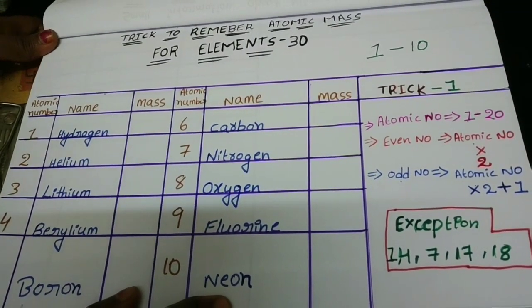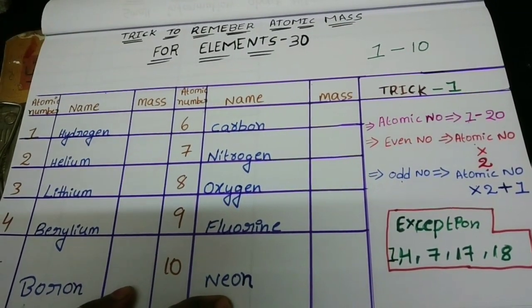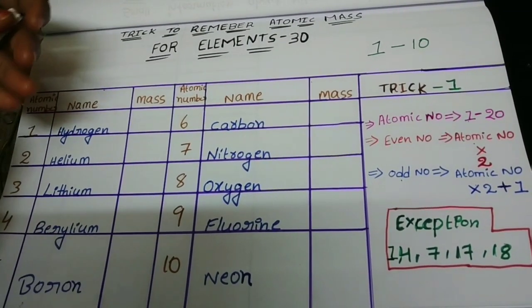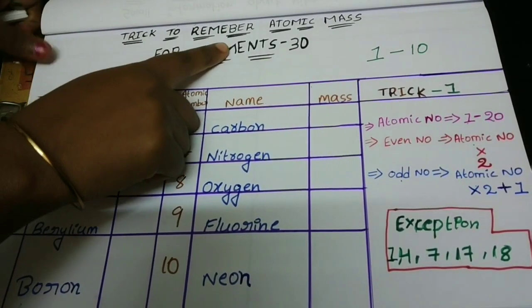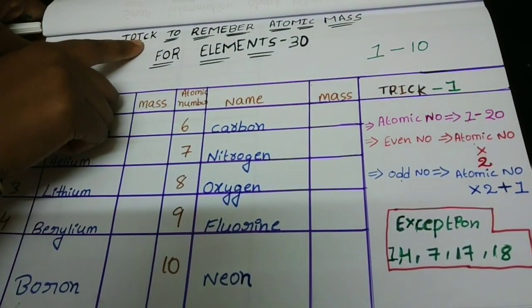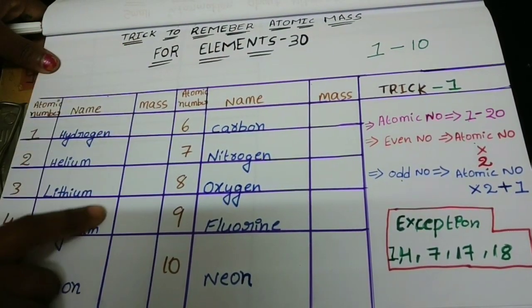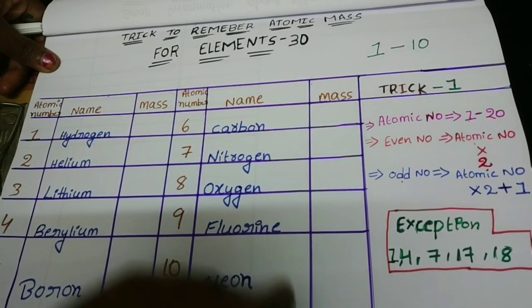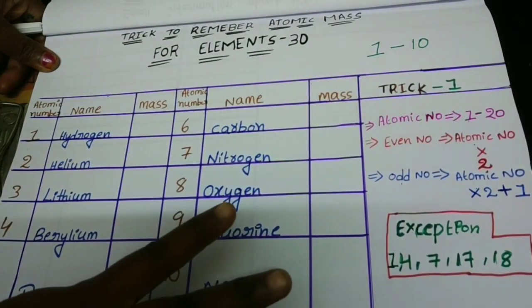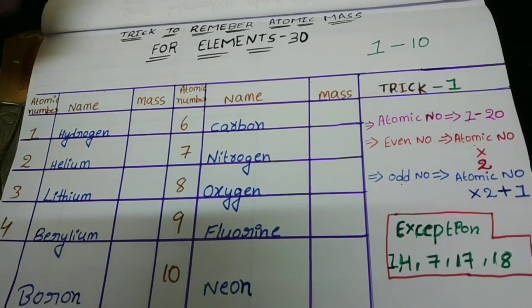Hello chemistry students, welcome to Summa chemistry channel. Today we will write the atomic masses of 30 elements using a trick. So here I will show you 2 tricks to remember them.